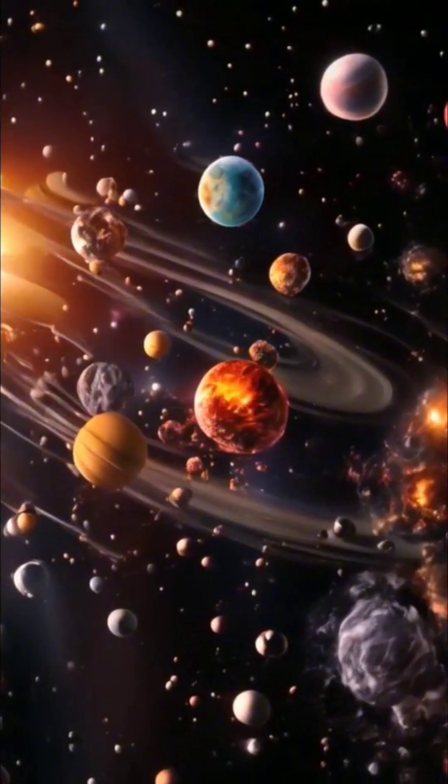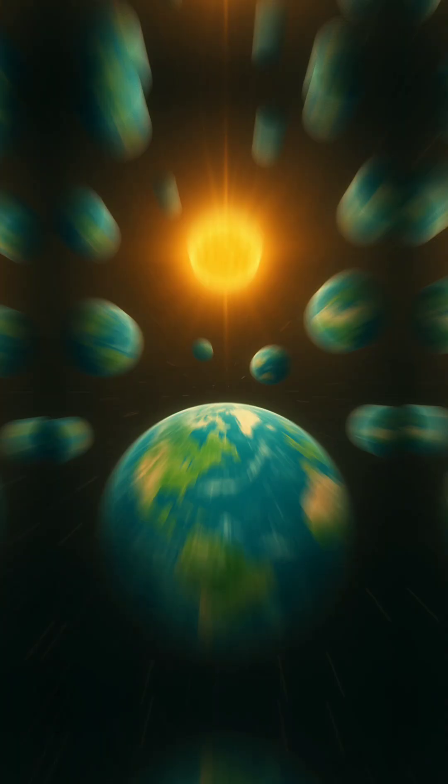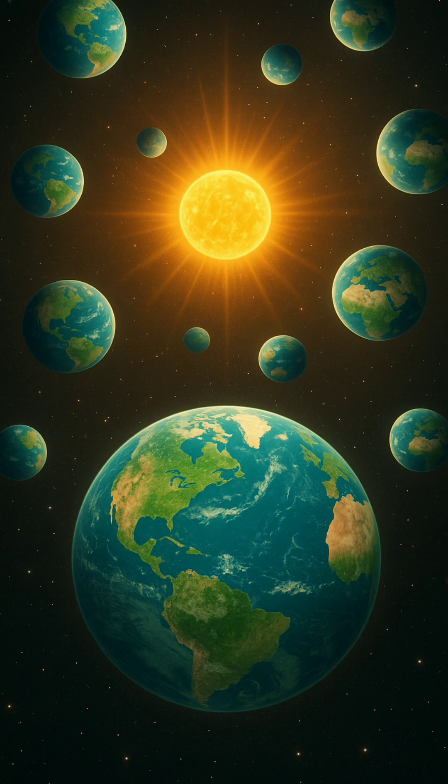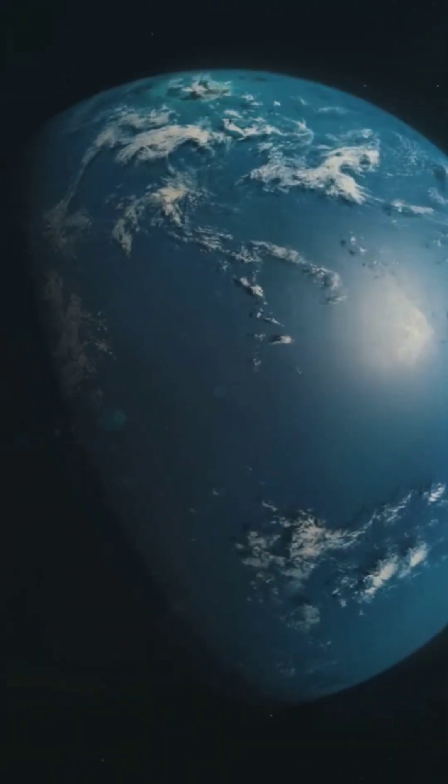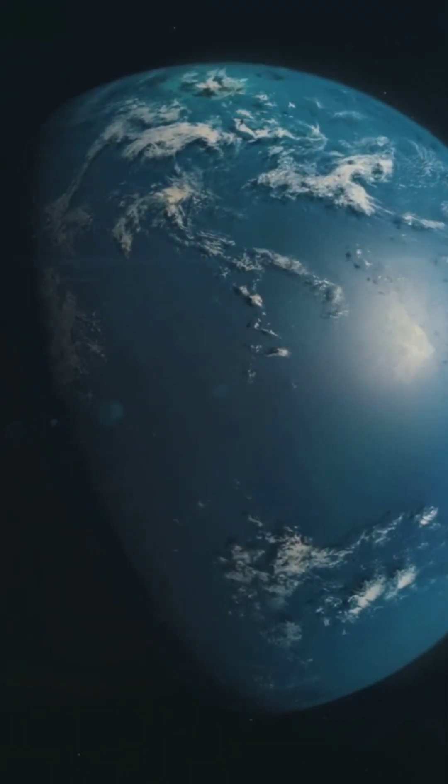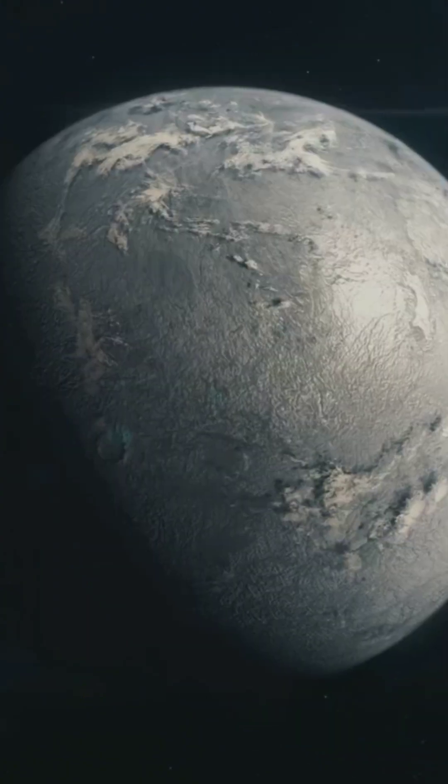A habitable planet, going by the book, is one that has the capacity to support life as we comprehend it. Key requirements usually include the presence of liquid water, a balanced atmosphere, and a temperature range suitable for biological processes.